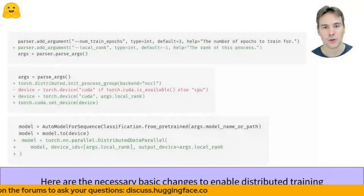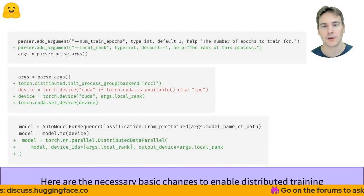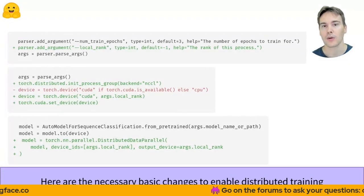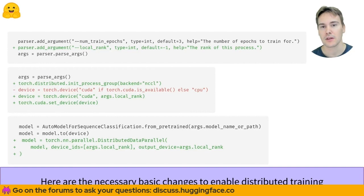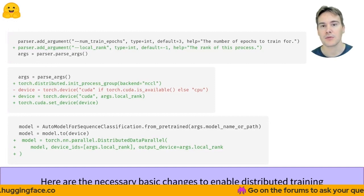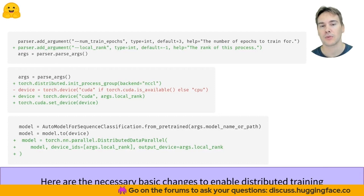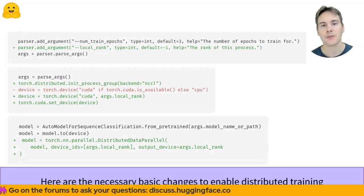In terms of code, here is what we first need to add to our script. First, it needs to accept a new argument called local rank that will indicate the index of the process launched. Then we have to initialize the Torch distributed environment and set up the device using that local rank. Lastly, we need to wrap the model in a distributed data parallel container which will be responsible for the average across processes of the gradients we saw on the previous slide. This part was easy enough.